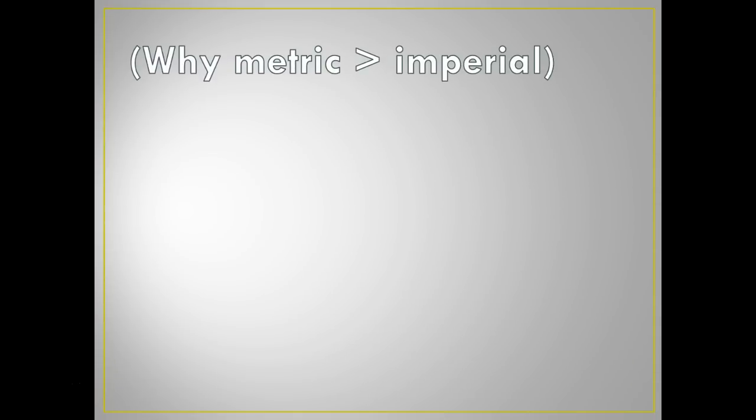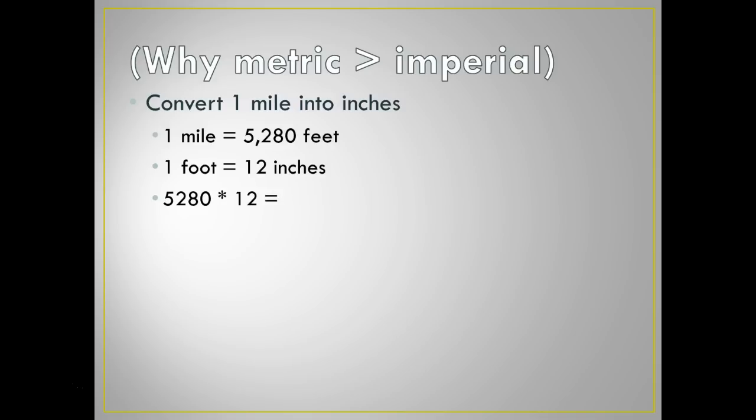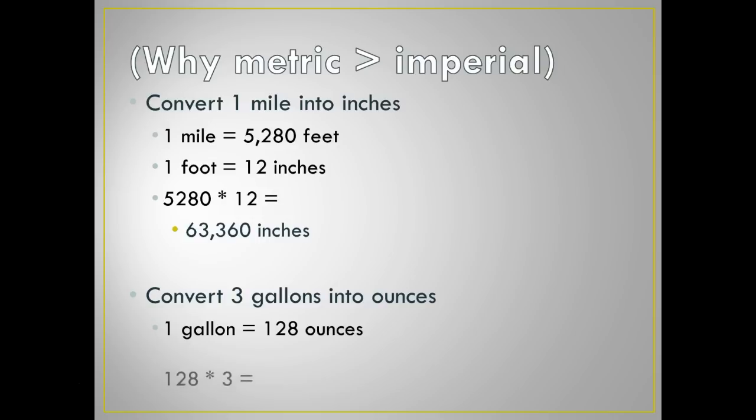Here's why metric is better than imperial. If you were to convert one mile into inches, you would have to do some math. Because one mile is 5,280 feet, one foot is 12 inches. To get to that, you'd need to multiply 5,280 times 12, which can be done, but you need a calculator. You can't do that in your head. That's no fun. If you were to convert three gallons in ounces, first off, you have to be like me and look up how many ounces there are in a gallon, which is 128. I didn't know that. 128 times 3 gives you 384. You can't do that in your head.